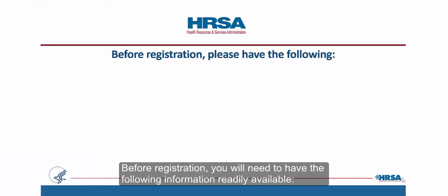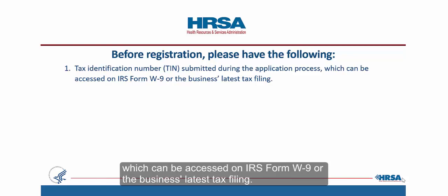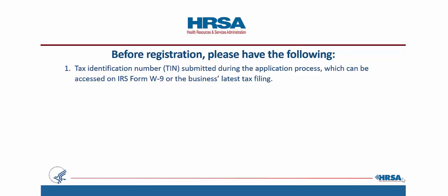Before registration, you will need to have the following information readily available. First, the Tax Identification Number, or TIN, submitted during the application process, which can be accessed on IRS Form W-9 or the business's latest tax filing.